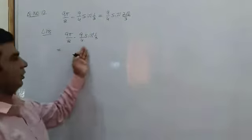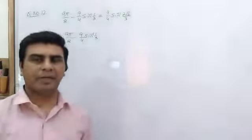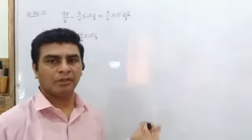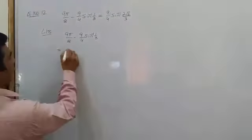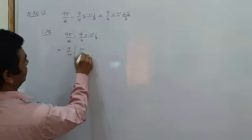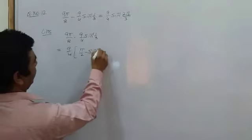You can see in your left hand side 9/4 is common from the given two terms. So 9/4 is common. This is your 5/2 minus sin inverse 1/3.